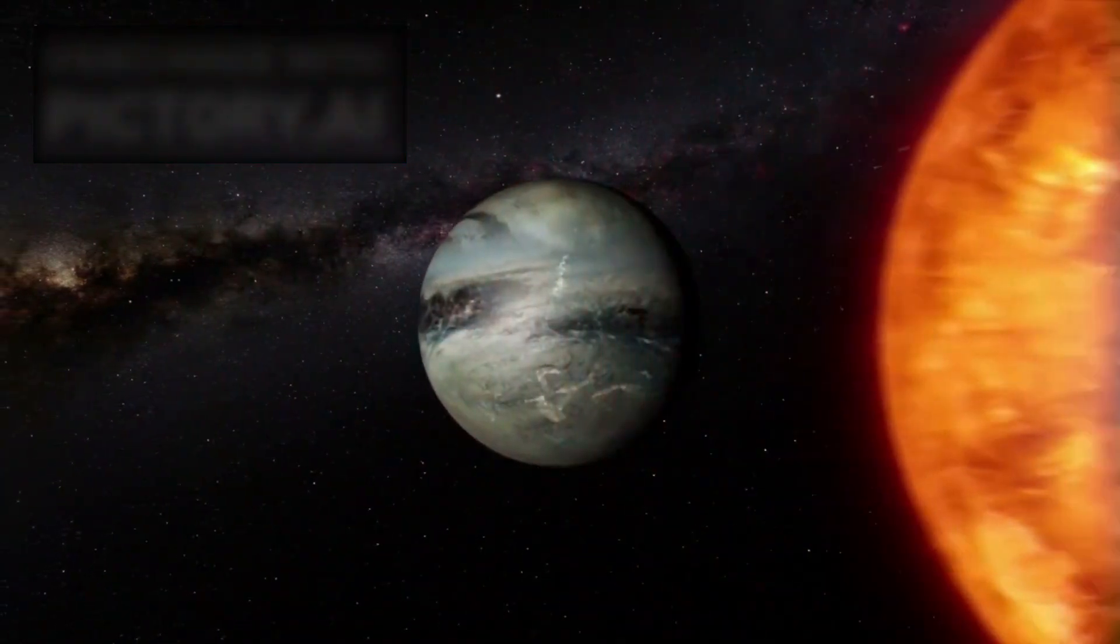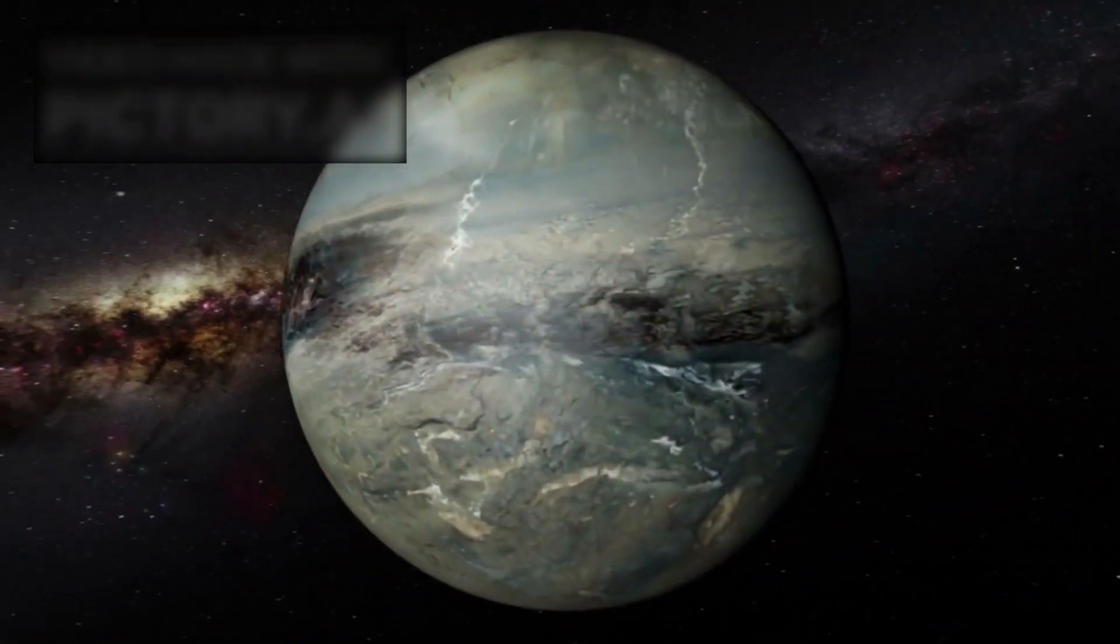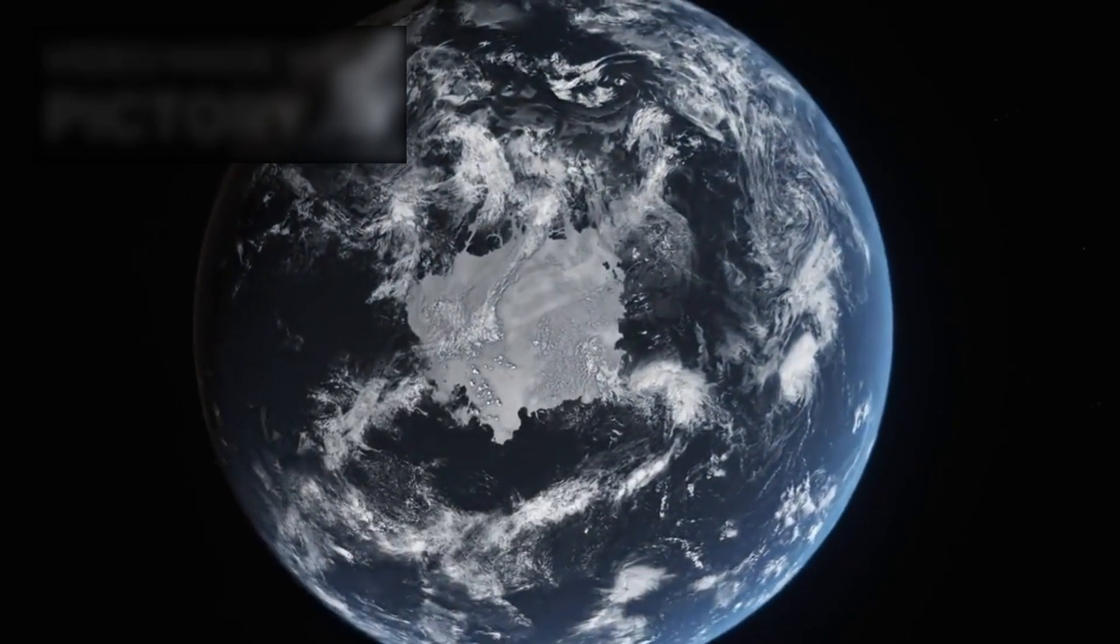Beyond its striking appearance, Sputnik Planitia plays a crucial role in Pluto's geology. It is so vast that it affects Pluto's rotation and gravitational balance, almost as if the planet were weighted unevenly on one side. But what lies beneath this icy expanse may be even more remarkable.